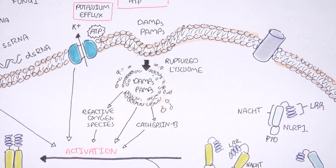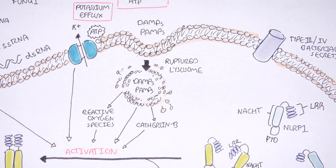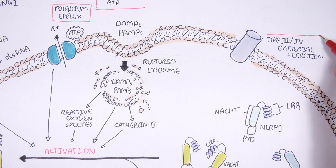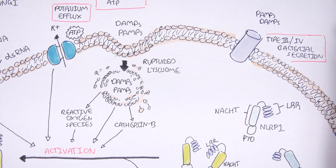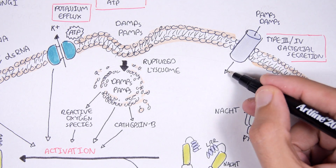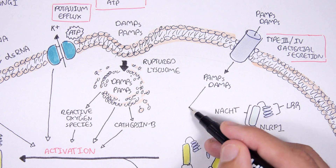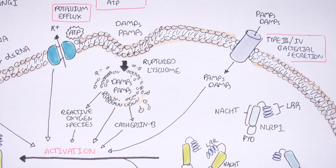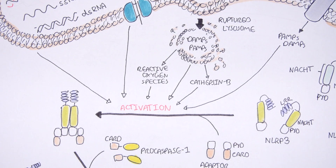A channel formed by type 3 and type 4 bacterial secretion systems can insert PAMPs as well as DAMPs directly within the cell, leading to NLRP3 activation and subsequent inflammasome formation.